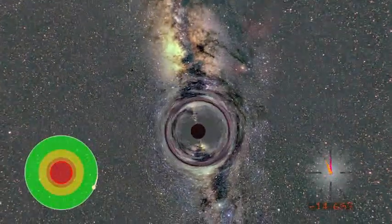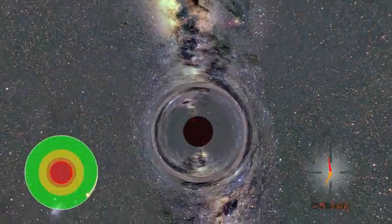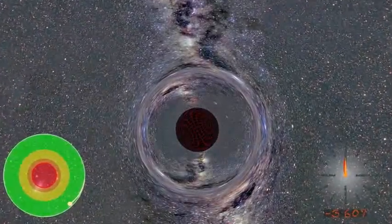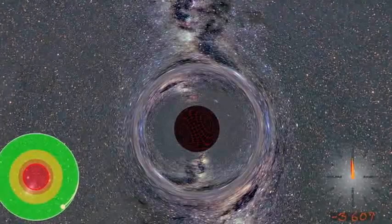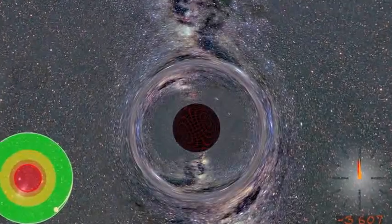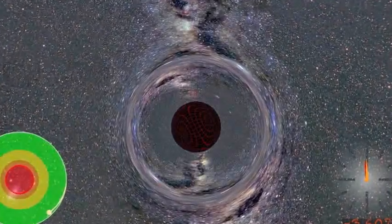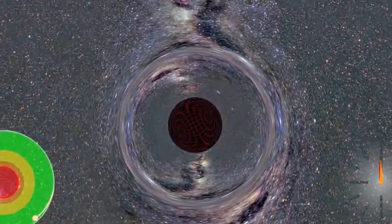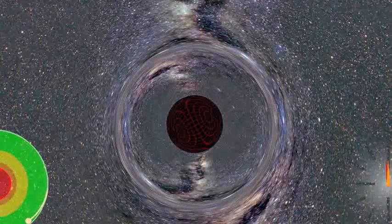As we begin our approach, we can immediately see the distortion of light around the edges of the black hole. This is the gravity well bending light, lensing the light from the background stars into long circular arcs. The event horizon is depicted as a red grid. This marks the boundary beyond which nothing can escape, not even light.